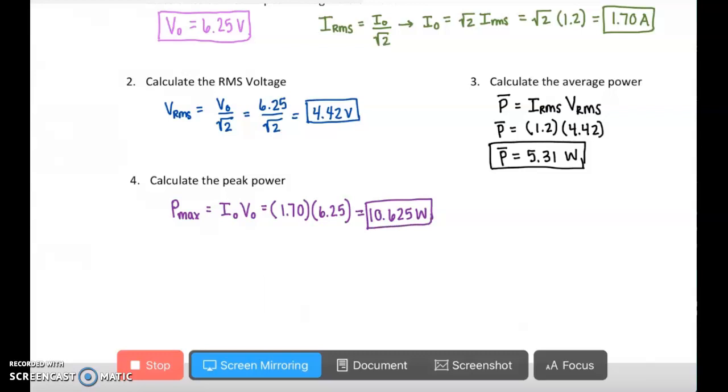This is also a great time to use our other equation involving maximum or peak power to double check our work. The other equation that I'm referring to is that the average power is equal to the maximum power divided by 2. Or we could rearrange this to see that the maximum power would be 2 times our average power.